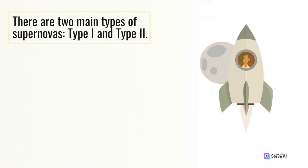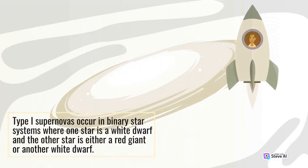There are two main types of supernovas, type I and type II. Type I supernovas occur in binary star systems where one star is a white dwarf and the other star is either a red giant or another white dwarf.